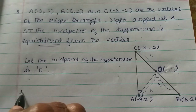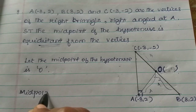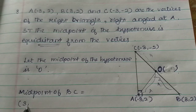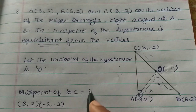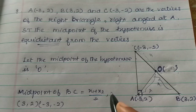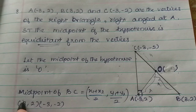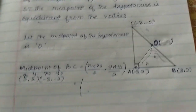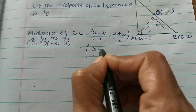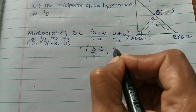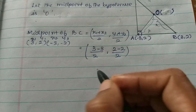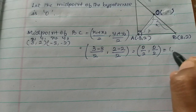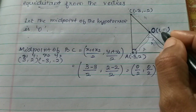Midpoint of BC: B is (3,2) and C is (-3,-2). The formula is (x1+x2)/2, (y1+y2)/2. So x1=3, x2=-3 divided by 2 gives (3+(-3))/2 = 0/2 = 0. And y1=2, y2=-2 gives (2+(-2))/2 = 0/2 = 0. So O = (0,0).